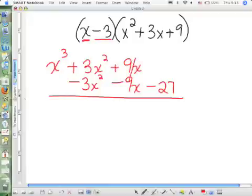Once again, look. Because those first two signs were different, these two middle terms are canceling each other out. And now I have x cubed minus 27.